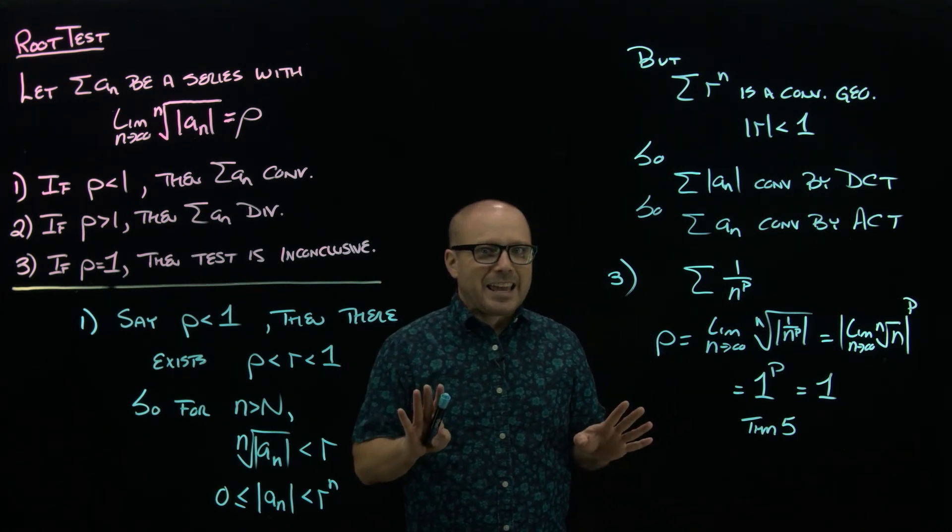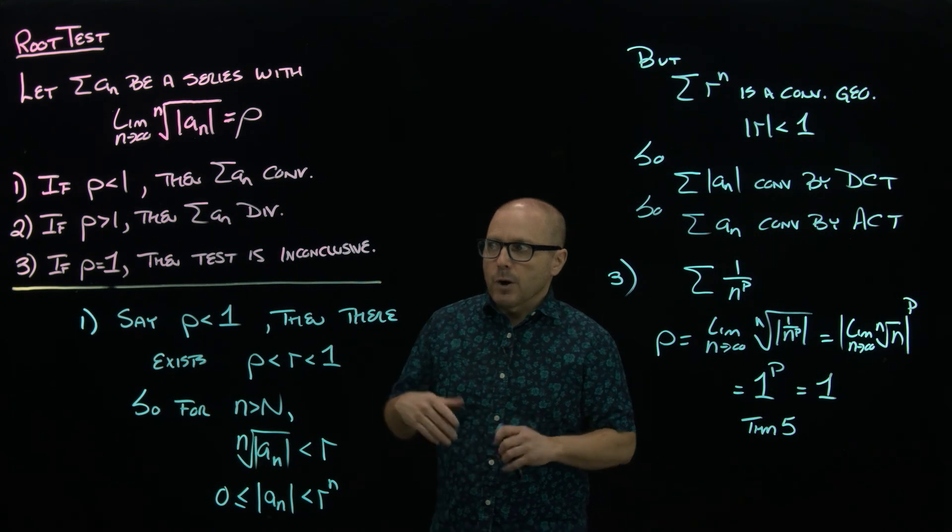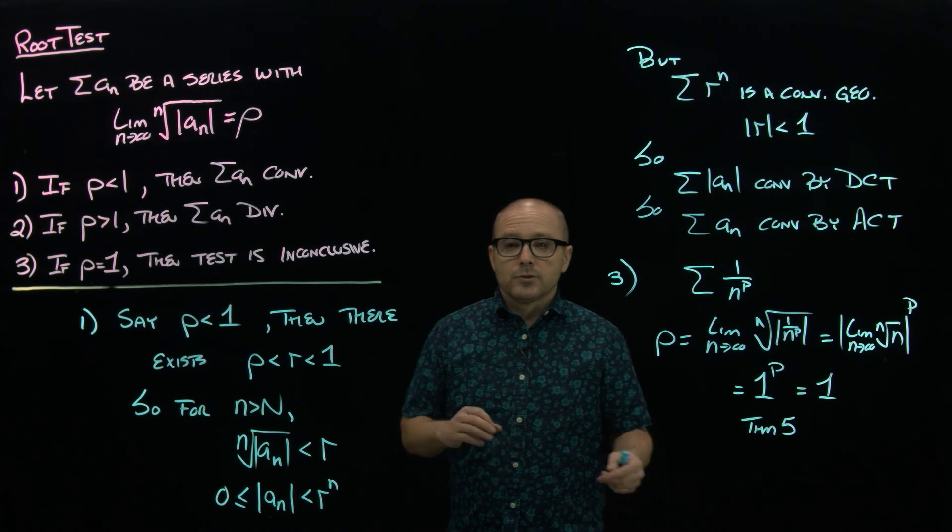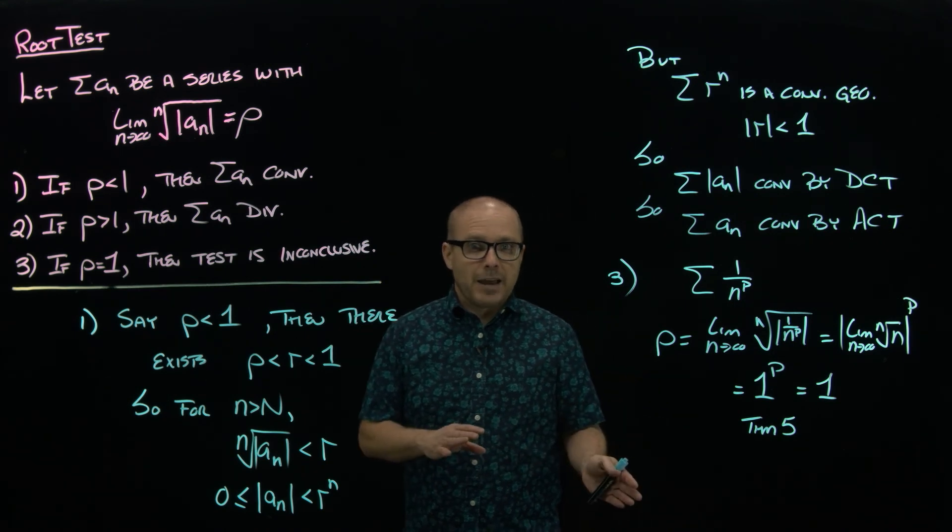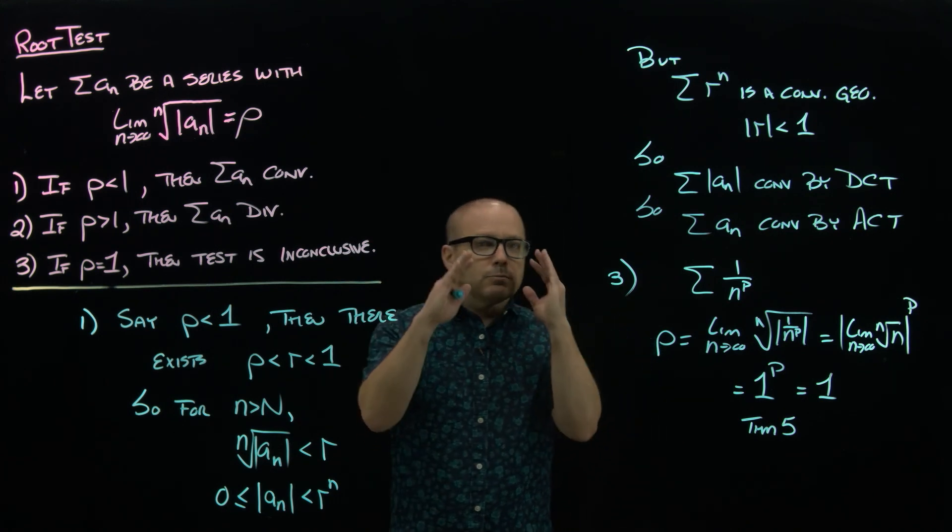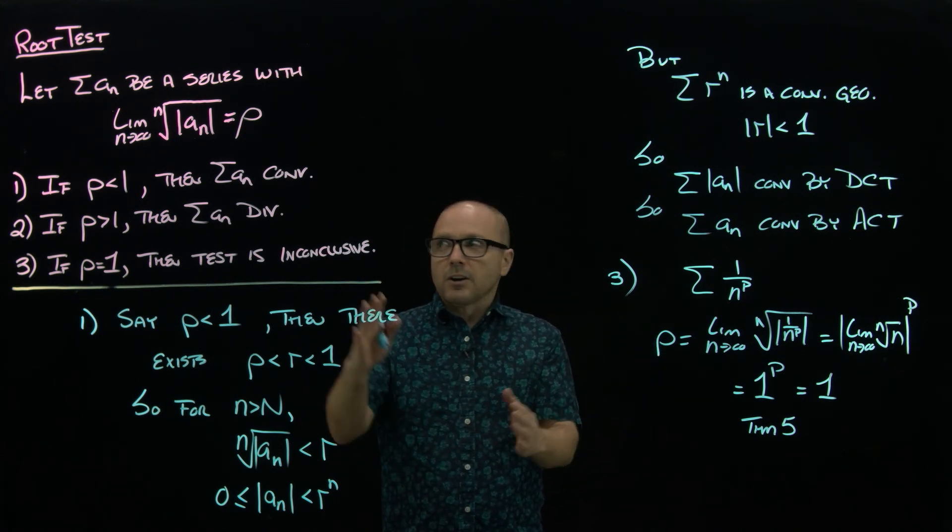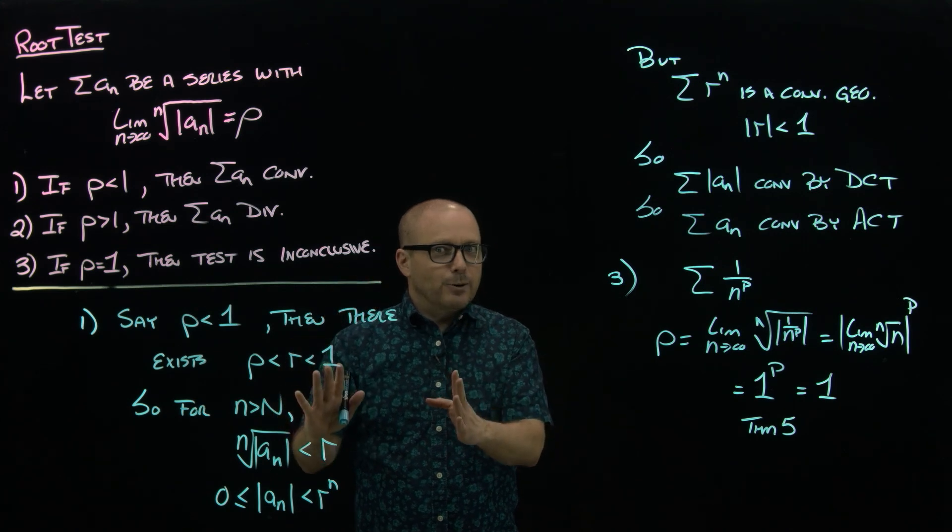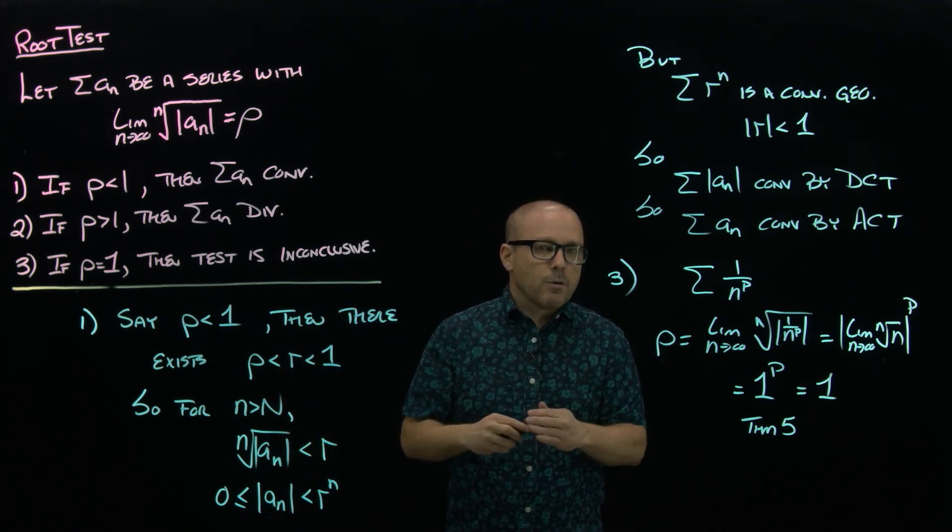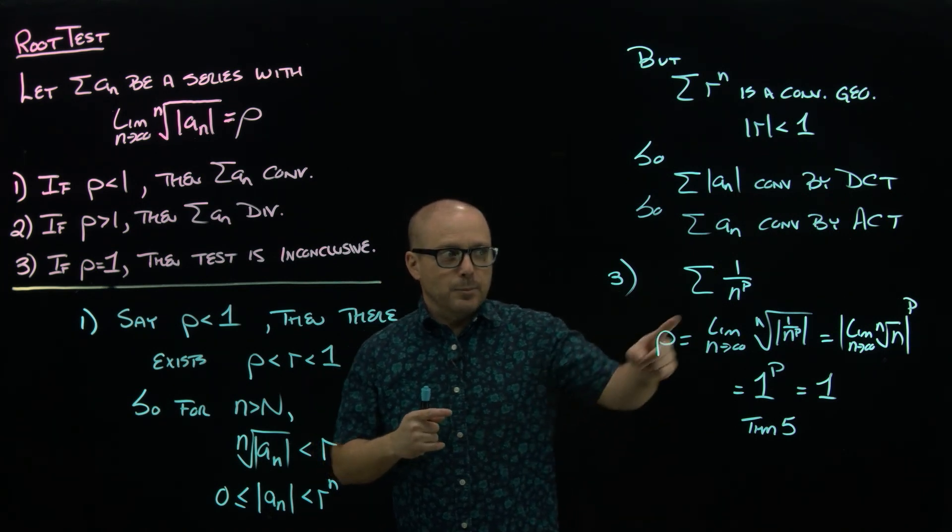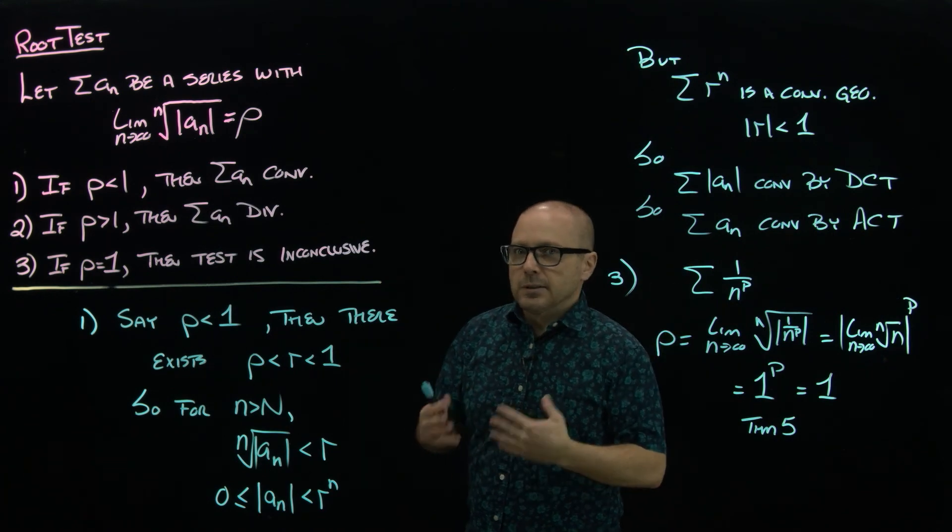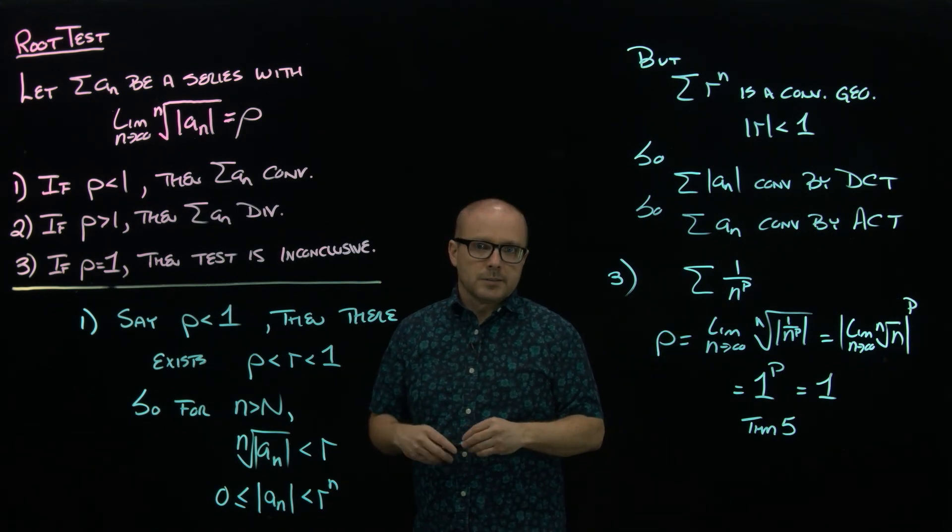Also, a thing to keep in mind about ratio and root: they will evaluate the same. So if your ρ comes out to be one under root test, it's going to come out to be one under ratio test. So don't use one of these as a backup to the other, because you're going to get the same results. If you're doing ratio test and you get ρ equal to one, don't start all over with root test—you are going to get ρ equal to one again. So like I said before, ρ equal to one probably means that you either had a p-series and just didn't notice it, or you have something close to a p-series and you should have done DCT or LCT.